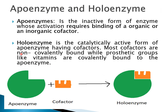Apoenzymes are the inactive forms of the enzymes. To become active, they require binding of some cofactor, which can be an organic or inorganic molecule. The holoenzyme is the active form of the apoenzyme — it has cofactors attached to it. We have non-covalent cofactors as well as covalent ones; covalent ones are called prosthetic groups. Vitamins are prosthetic groups covalently bound to the apoenzyme, giving rise to a holoenzyme.